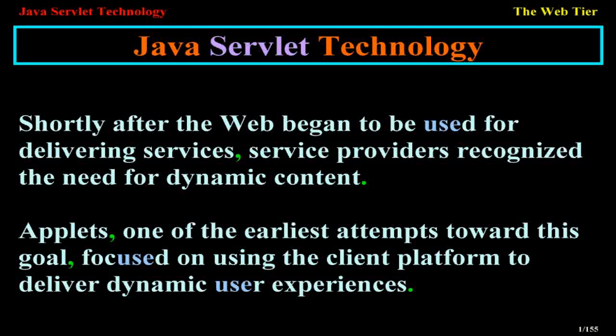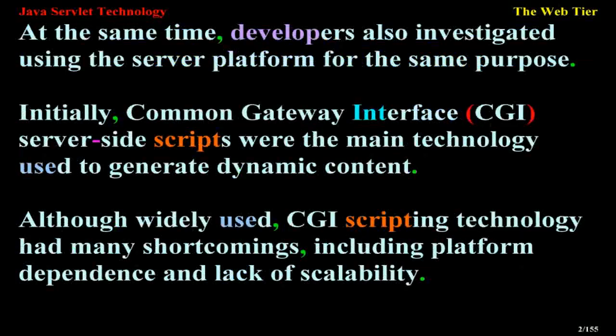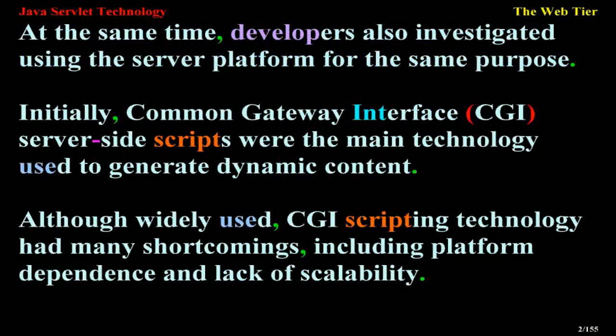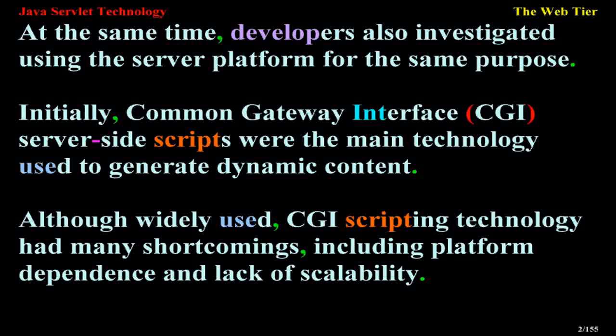Java server technology. Shortly after the web began to be used for delivering services, service providers recognized the need for dynamic content. Applets, one of the earliest attempts toward this goal, focused on using the client platform to deliver dynamic user experiences. At the same time, developers also investigated using the server platform for the same purpose. Initially, common gateway interface CGI server-side scripts were the main technology used to generate dynamic content.